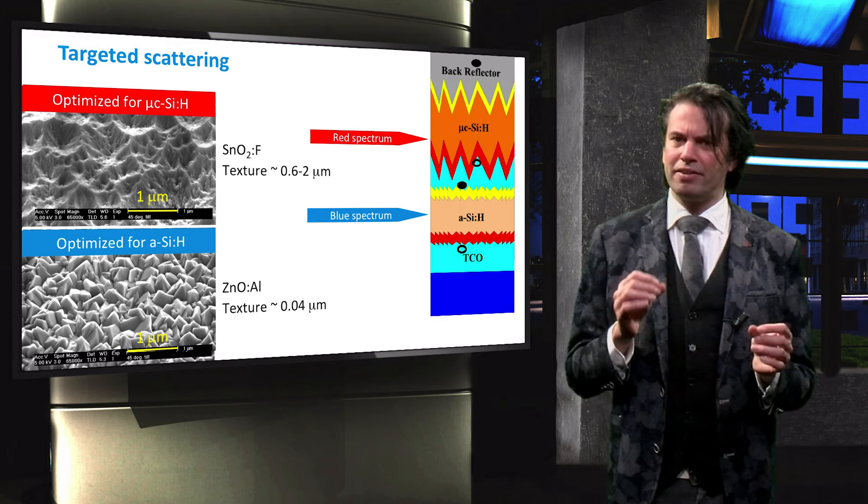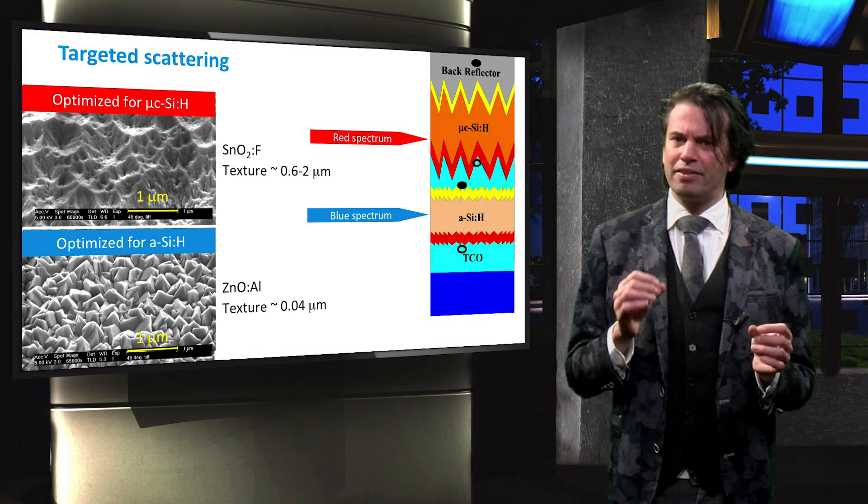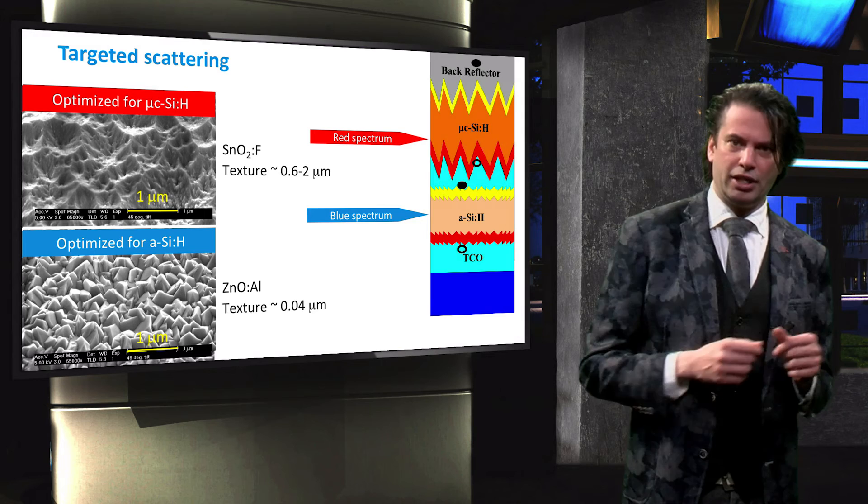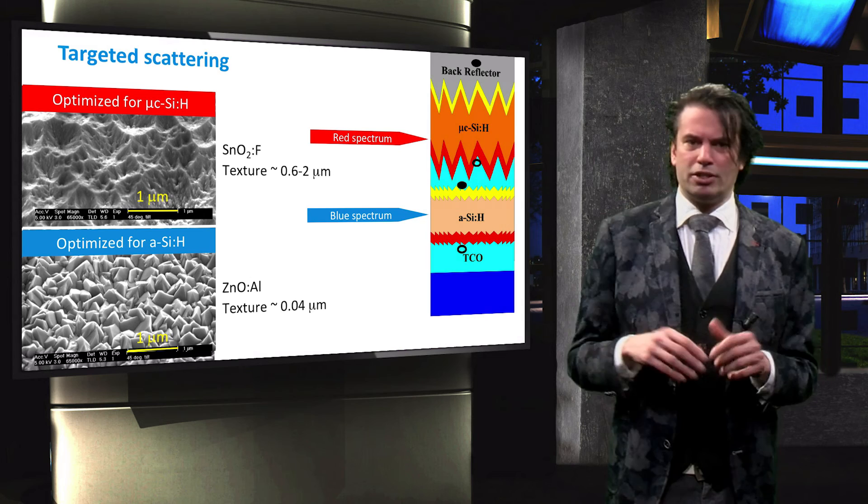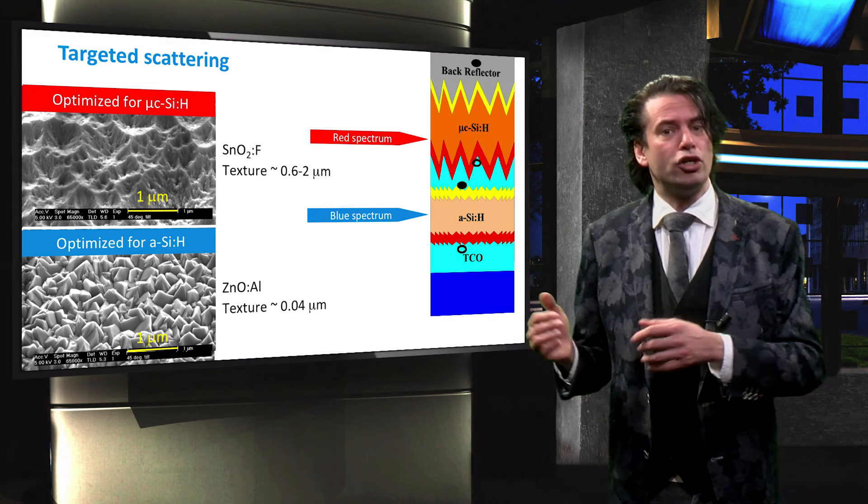With these functions in mind, the amorphous silicon layer has very small Rayleigh-sized features. These features effectively scatter the blue light, but hardly affect the red light. The microcrystalline silicon texturing on the other hand has larger features, so effectively scatter the incident red and infrared light.